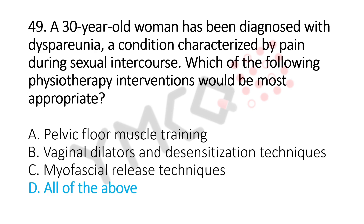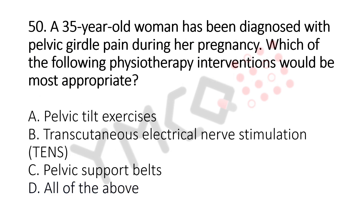Now let's move to question number 50. A 35-year-old woman has been diagnosed with pelvic girdle pain during her pregnancy. Which of the following physiotherapy interventions would be the most appropriate? Option A, pelvic tilt exercises. Option B, transcutaneous electrical nerve stimulation, TENS. Option C, pelvic support belts. Option D, all of the above. And the answer is Option D, all of the above.